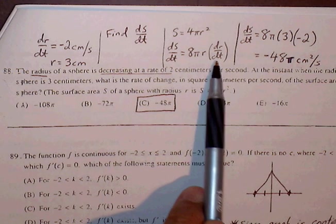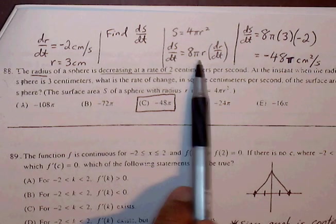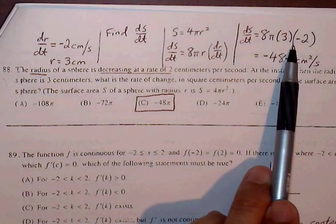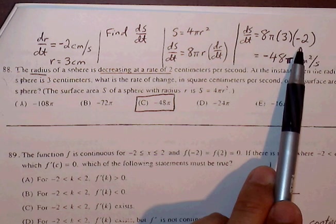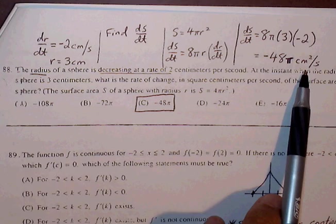We know dr/dt is negative 2, we know radius is 3, and then the rest we can just combine together. 8 times 3 is 24, times negative 2 is negative 48, so negative 48π square centimeters per second.